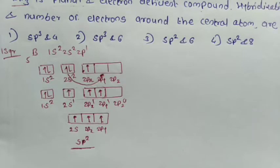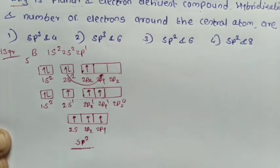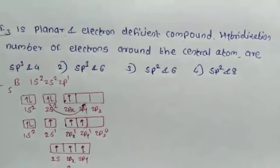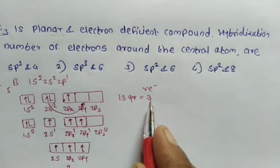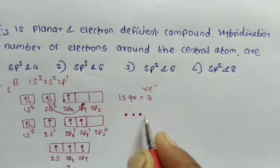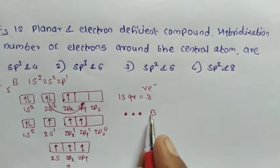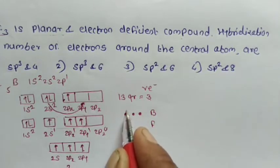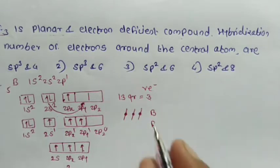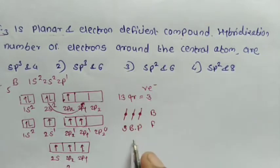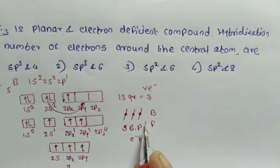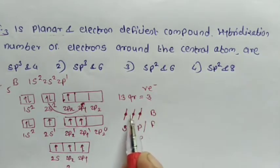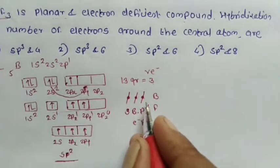Solving directly: boron is in group 13, so it has 3 valence electrons. The 3 fluorine atoms are each attached to one valence electron of boron, forming 3 bond pairs. Since there are 3 bond pairs, the hybridization state of BF3 is sp2.